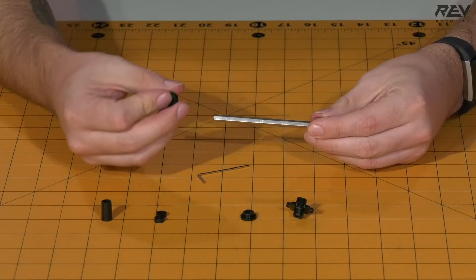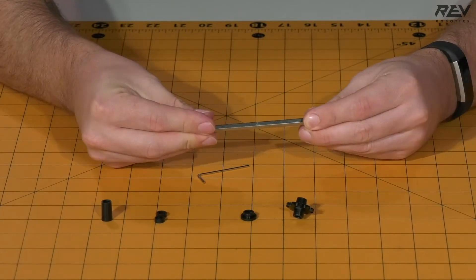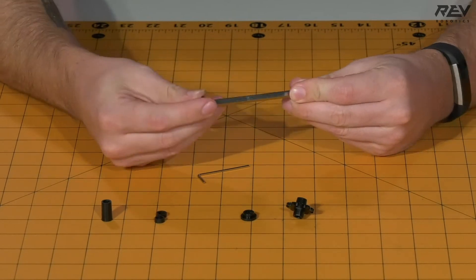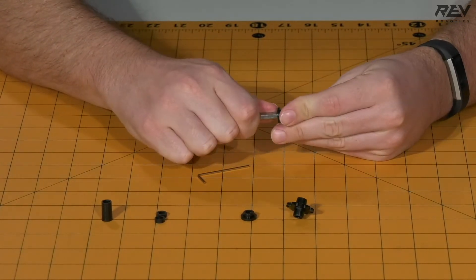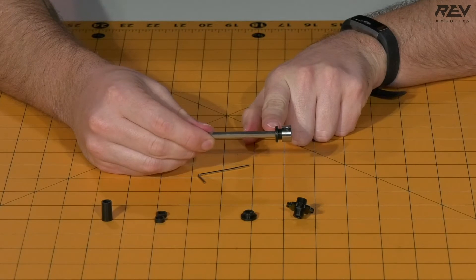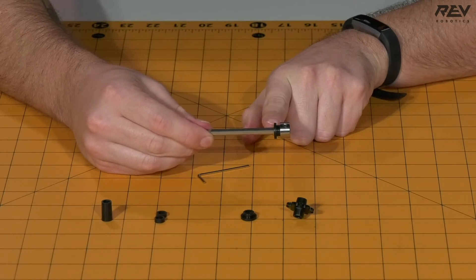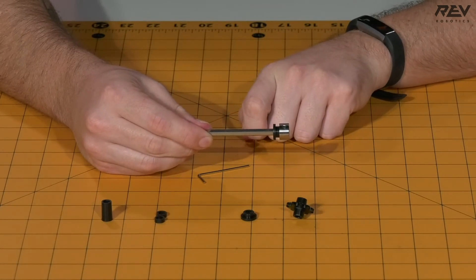Next, take your short through-bore bearing and slide that onto the shaft. Note the location of the flange relative to the shaft collar. This is going to be important later on during the assembly.